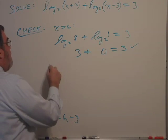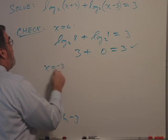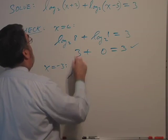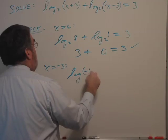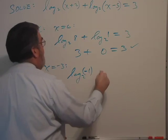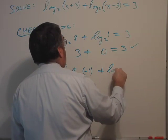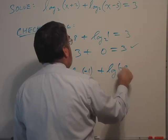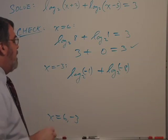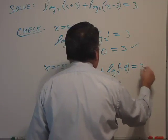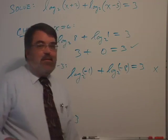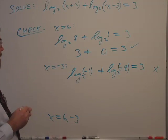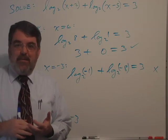Let's check the other one, x equals -3. And here I get the log base 2 of -1 plus the log base 2 of -8 equals 3. And that's automatically disqualified. That's a bad solution. For one thing, we do not take logarithms of negative numbers.